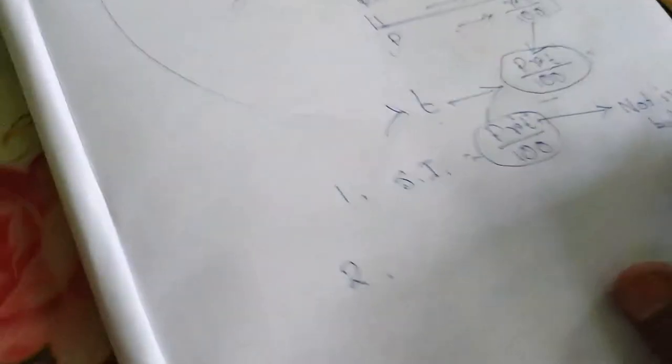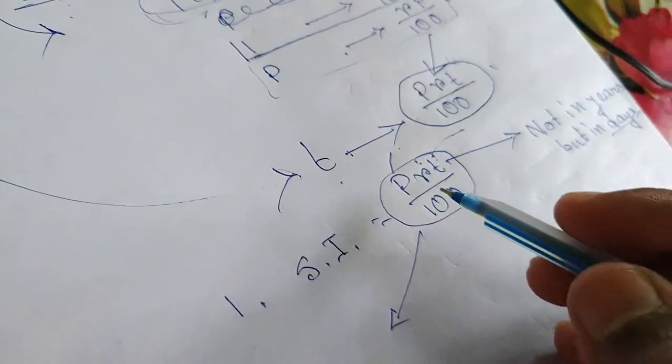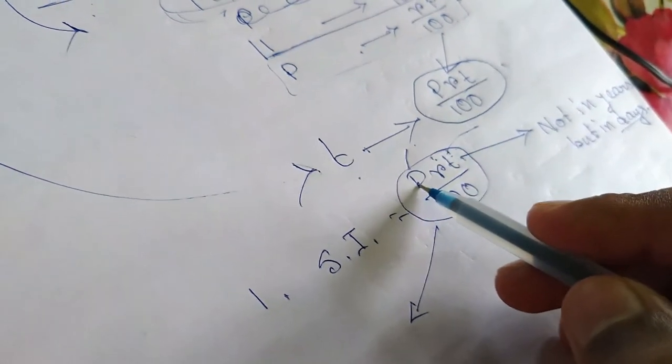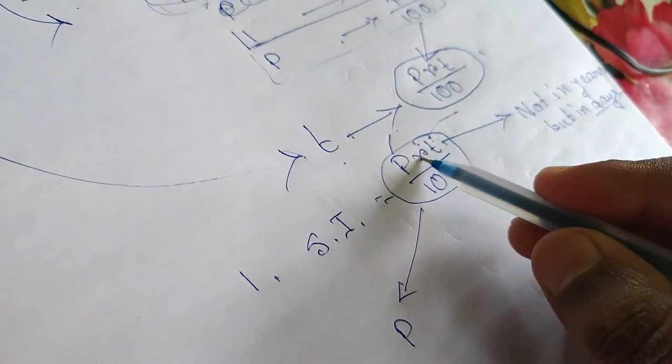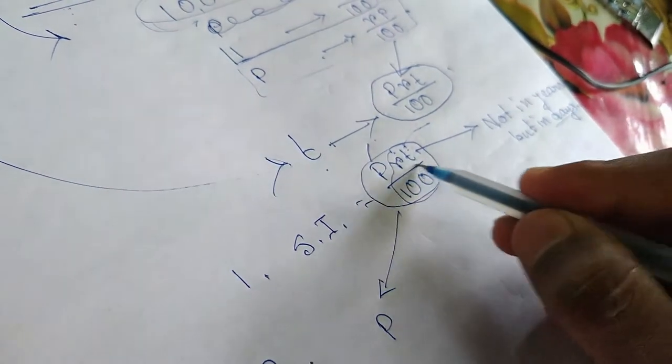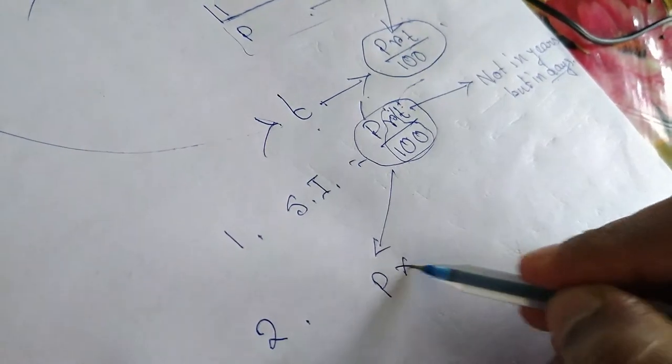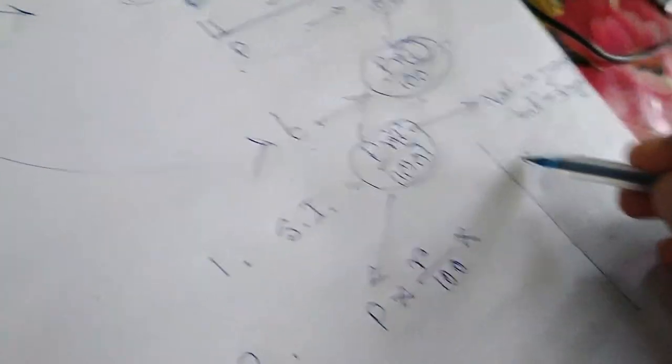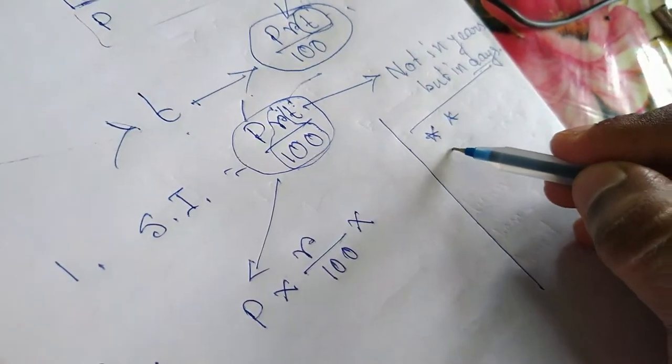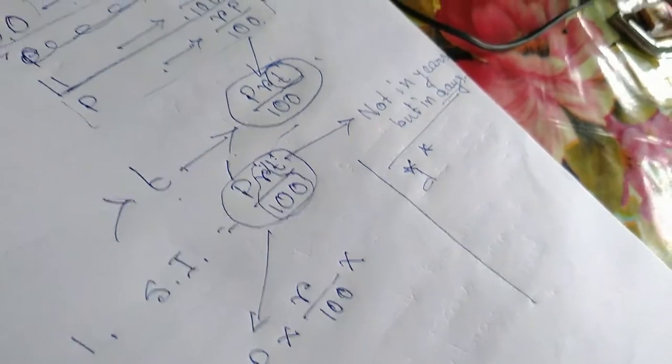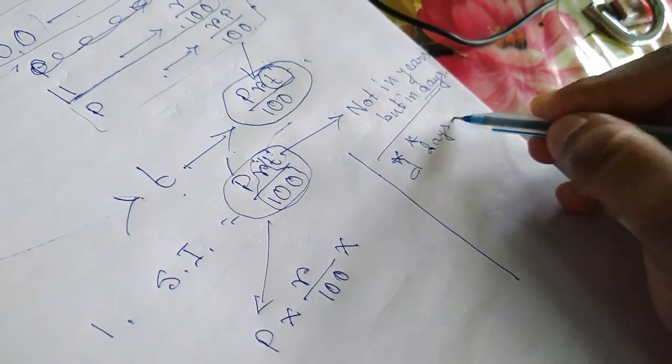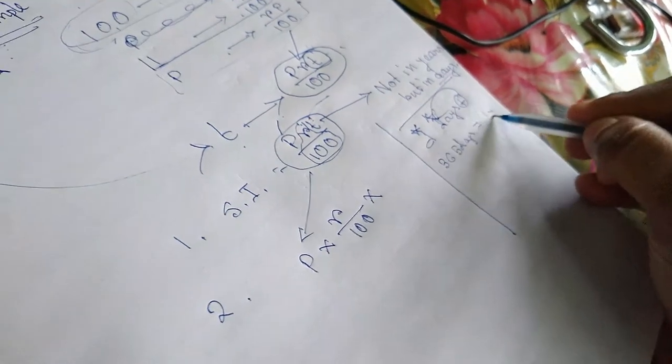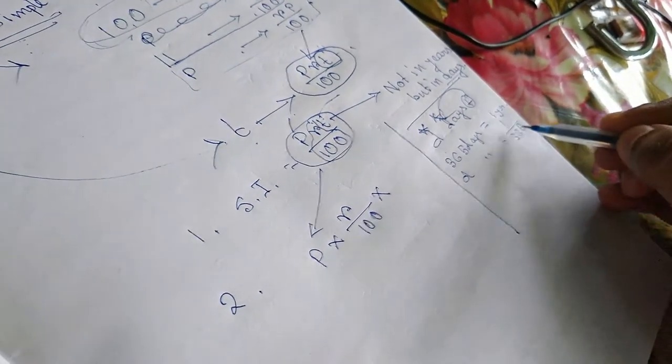When the time is given in days, let's see how to convert that. The principle P will always remain the same, R by hundred will also remain the same because rate of interest will not change. Only the time will change. Let us assume that the money will be given for D days. Now 365 days equals 1 year, therefore D days will be equal to D by 365 years.